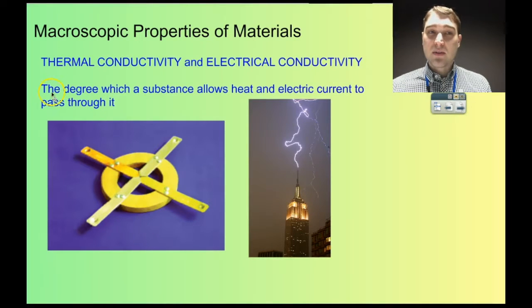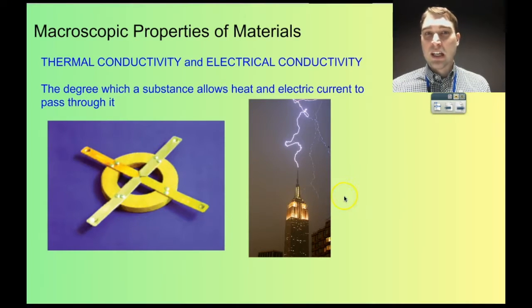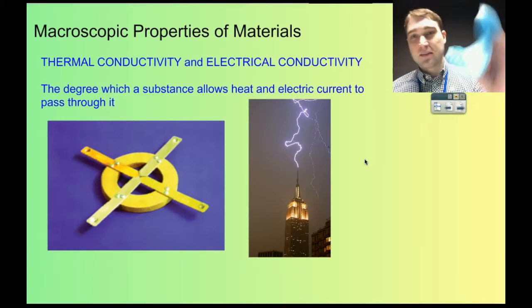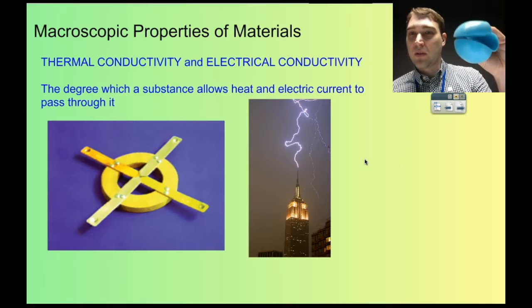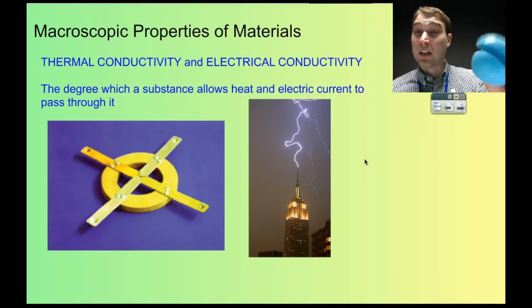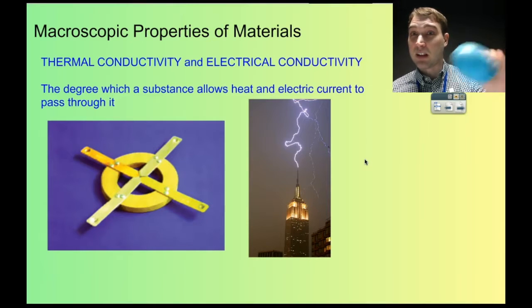Some other properties: thermal conductivity and electrical conductivity. Thermal conductivity is how well a material allows heat to transfer through it. If we go back to my little mitt, you'd want it to have very low thermal conductivity because if I touch it onto a hot object, I don't want the heat energy transferring through it to my fingers — otherwise it's not useful at its job and I'll just burn myself, which is the whole point of this mitt: to avoid burning myself when carrying things.